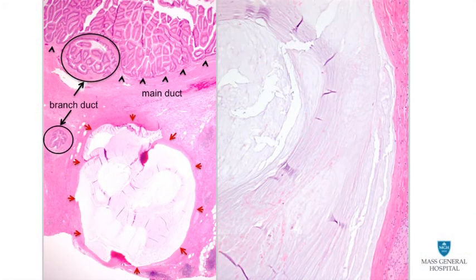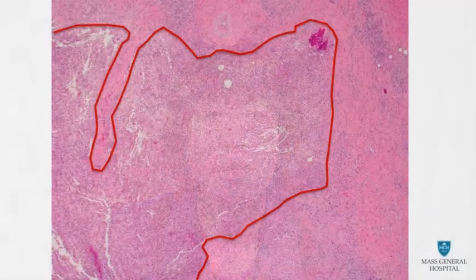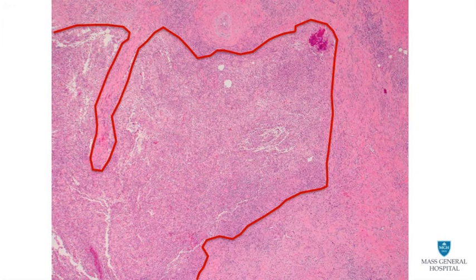In this patient, in addition to the main and branch duct involvement, there are scattered acellular mucin pools, marked by red arrows in the left-hand side slide. As shown on the right, the mucin pools are not lined by epithelial cells, consistent with mucin extravasation secondary to rupture of branch ducts, but not invasive carcinoma. In addition, there are a few large collections of inflammatory cells, indicative of resolving abscesses. The findings are consistent with the patient's history of repeated pancreatitis.